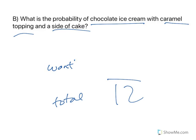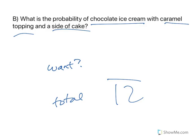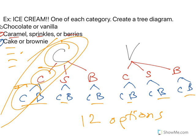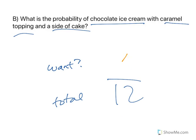So how many options of what we want? Chocolate ice cream, caramel topping, side of cake. Chocolate ice cream, caramel topping, side of cake. There is only one option of that. So my probability is one out of 12. And if we want that as a decimal, 8.3, I rounded, 8.3%. If you're happy with that, feel free to stop. But I want to go on to something that's a little bit exciting. Well, my exciting.